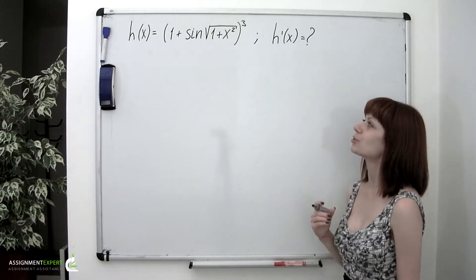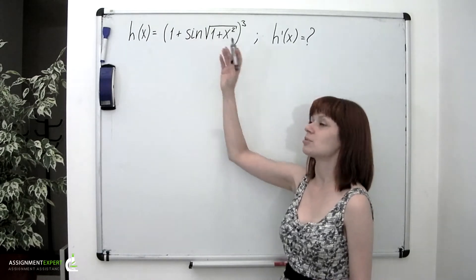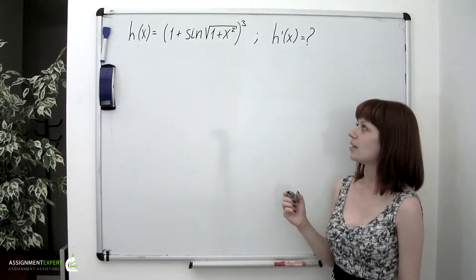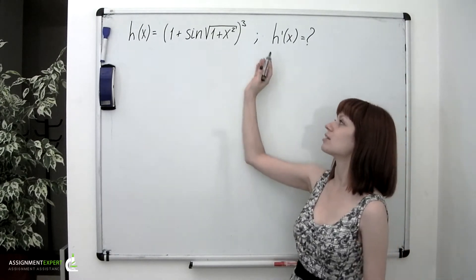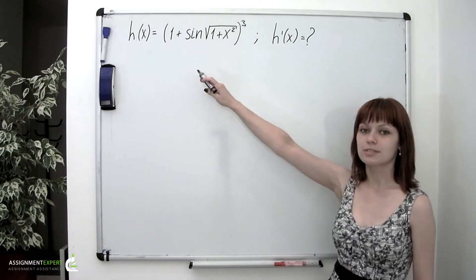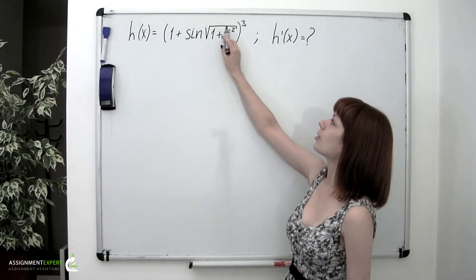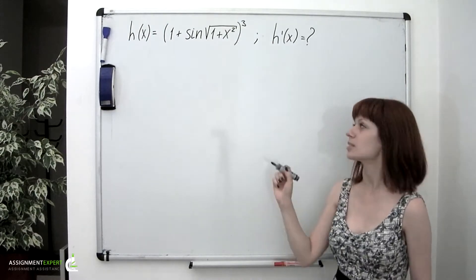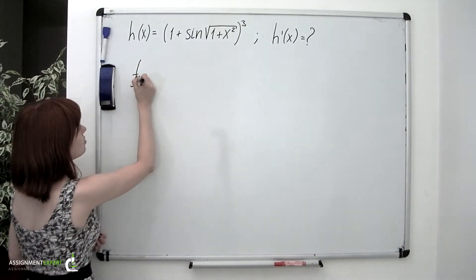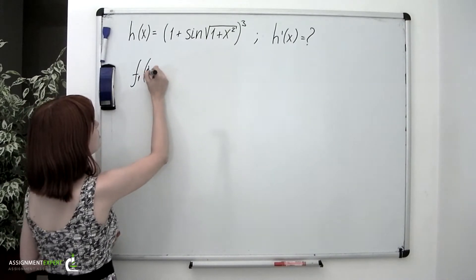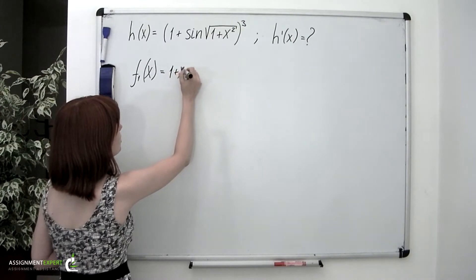To begin with, we should figure out the order in which the functions composing h of x are to be applied. There's a simple idea for that: we imagine estimating this function at a certain point using a calculator. We start with the polynomial under the square root, 1 plus x squared. So our f sub 1 of x is 1 plus x squared.